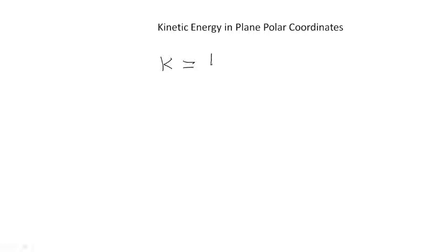Hello everyone, today we will discuss the kinetic energy in terms of the plane polar coordinate system. You know that kinetic energy in terms of the Cartesian coordinate system can be expressed as T is equal to 1 by 2 m times x dot squared plus y dot squared.